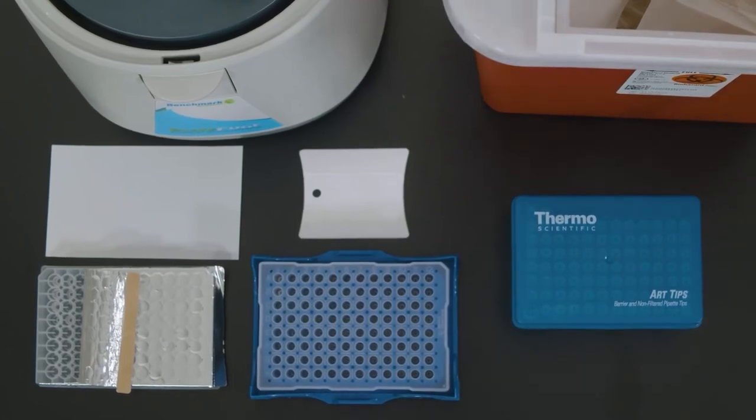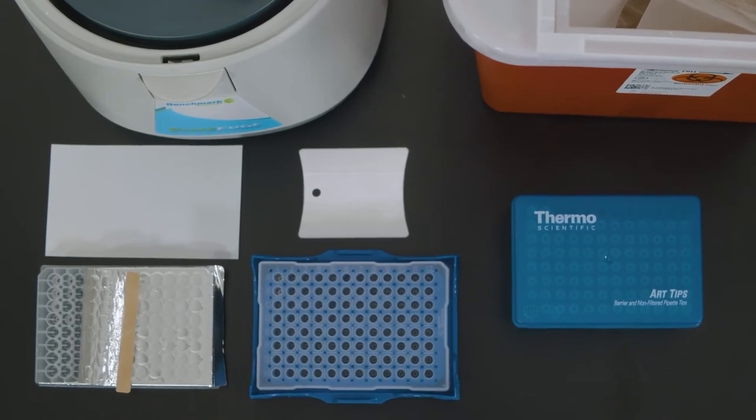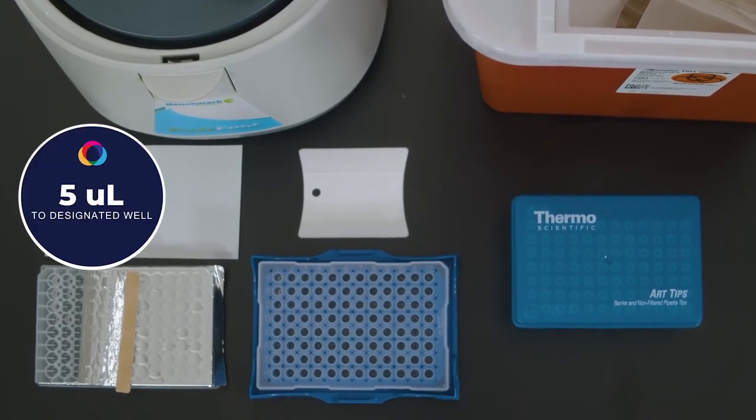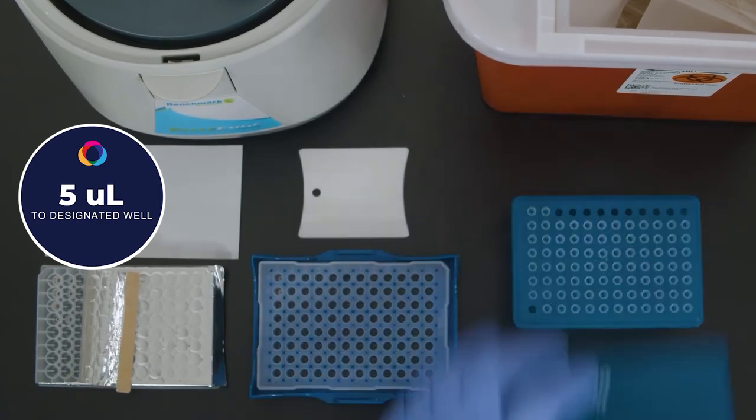Move to the RNA sample preparation area with the PCR plate containing the RT-PCR MasterMix and add 5 microliters of each sample to each designated well based on how you've designed your experiment.